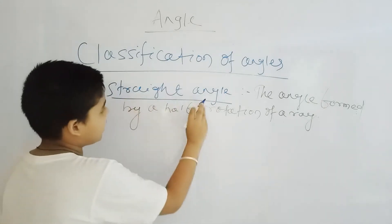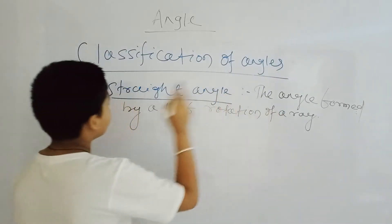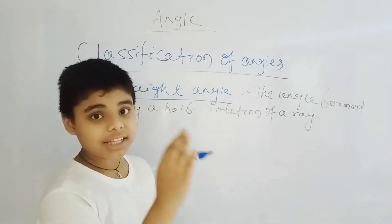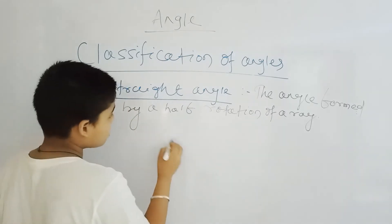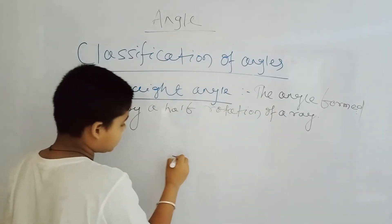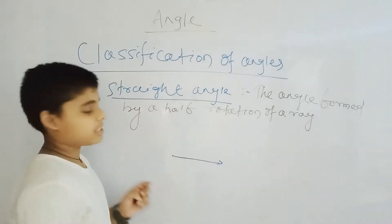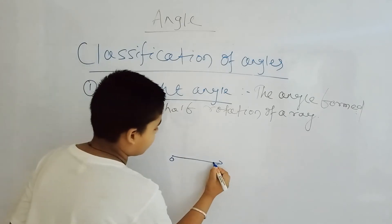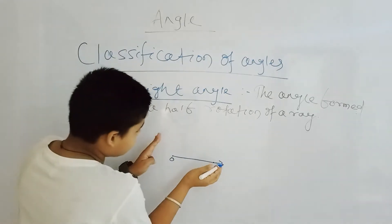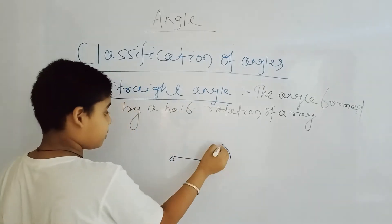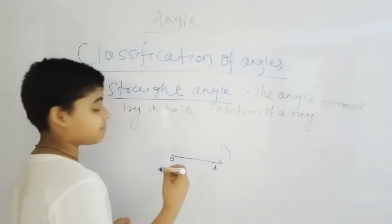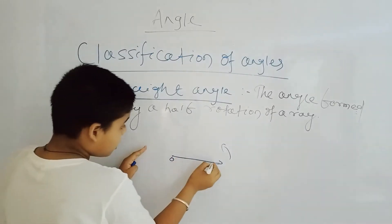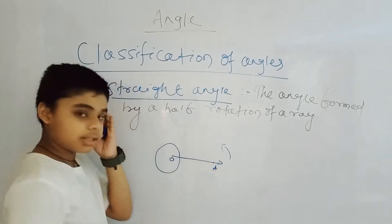First is the straight angle. What is a straight angle? The angle formed by a half rotation of a ray — I have explained about rotation of a ray in the previous video. So what will happen is a half rotation. I have explained the total rotation and half rotation. If it is a ray OA, then the rotation will determine the size of the angle.